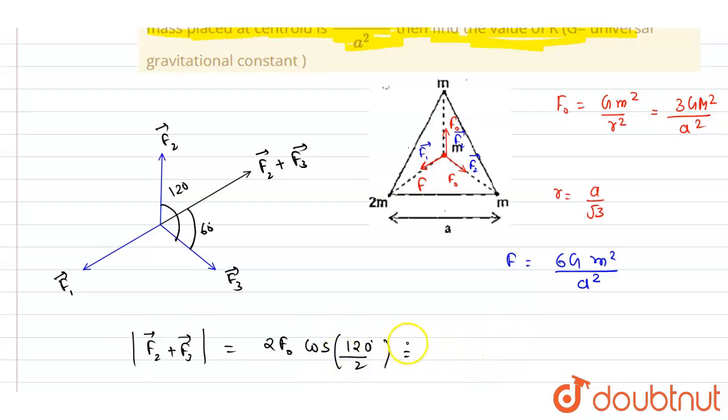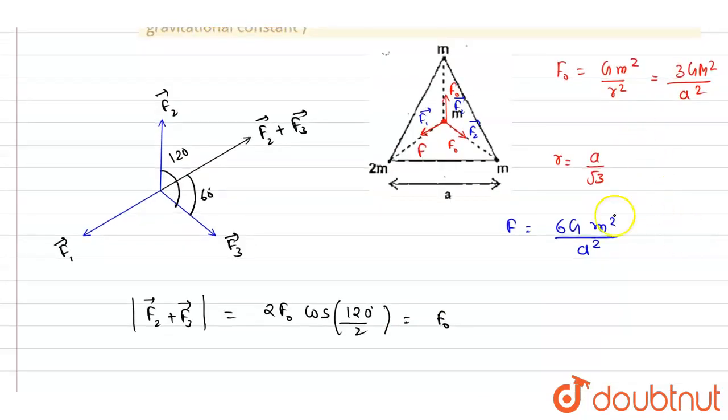That is 2f_naught cos of the angle between them, that is θ by 2, so it is cos 60, right? So cos 60 is half, so it will be f_naught only, that is 3Gm²/a².